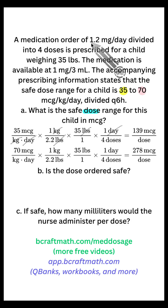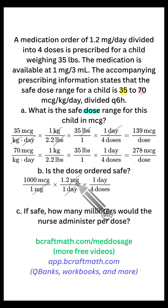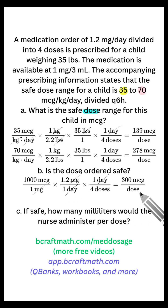Is that ordered dose safe? 1.2 milligrams per day — I'm bringing in a conversion: 1000 micrograms is one milligram. Now we can bring in that 1.2 milligrams per day, but this represents micrograms per day. So I'm going to get rid of that day and bring in the dose, because it is divided into four doses every six hours — four doses. They technically mean the same thing. Once you multiply your top numbers and divide by your bottom numbers, that gives us 300 micrograms per dose.